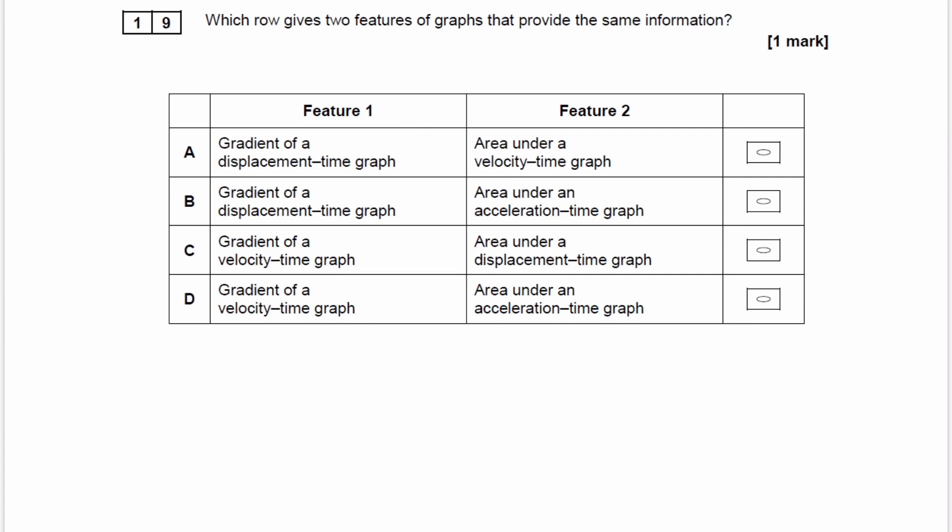We are asked which row gives two features of graphs that provide the same information. For feature 1, we have gradients of displacement or velocity-time graphs. For feature 2, we have area under velocity, acceleration, or displacement-time graphs.